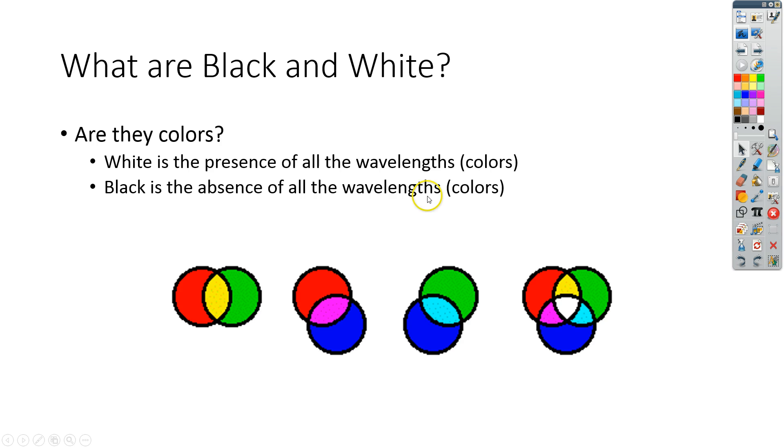Black would be the absence of all the colors. So if no color is coming through at all, you basically see black. You don't see anything at all, and that's how black works. That's how white works.